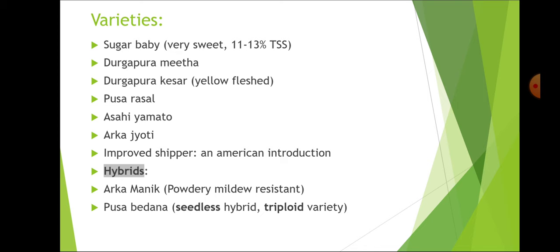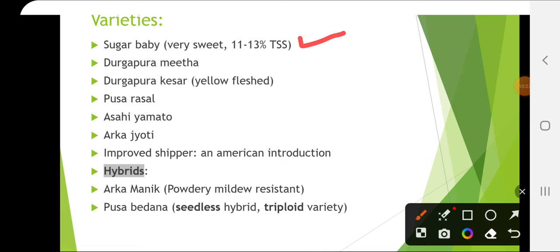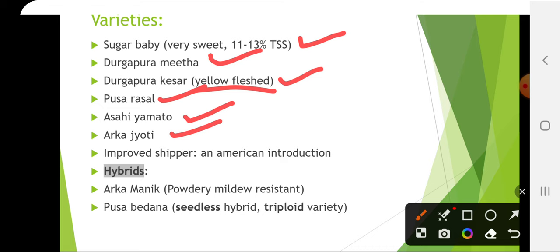Varieties of watermelon include Sugar Baby, which is very sweet with 11 to 13% TSS; Durgapur Meetha; Durgapur Kesar, which is a yellow-fleshed variety; Pusa Rasal; Asahi Yamato; Arka Jyoti; Improved Shipper, an American introduction. Hybrids include Arka Manik, which is powdery mildew resistant, and Pusa Bedana, which, as the name indicates, is a seedless triploid variety.